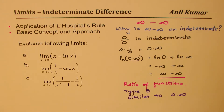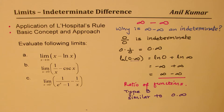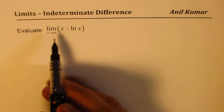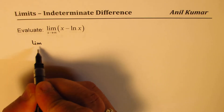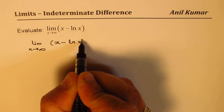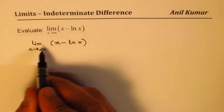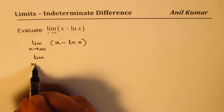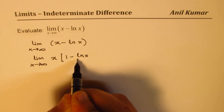We have exactly the same strategy to solve questions related to infinity minus infinity, and here are three examples to work through. In the first example, we evaluate the limit as x approaches infinity of x minus ln x. Since we need to write it as a ratio of two functions, it's better to take x outside as a factor, giving us: limit as x approaches infinity of x times (1 minus ln x over x).